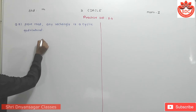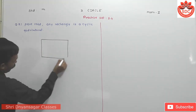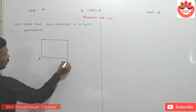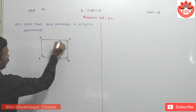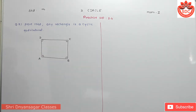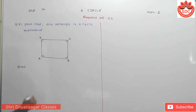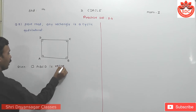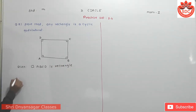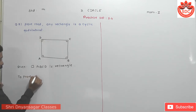For this, first I have to draw a quadrilateral. All of you know the property of a rectangle — each angle of the rectangle is 90 degrees. The given is: any rectangle, means quadrilateral ABCD, is a rectangle. We have to prove that this rectangle is a cyclic quadrilateral, i.e., quadrilateral ABCD is a cyclic quadrilateral.